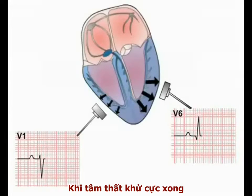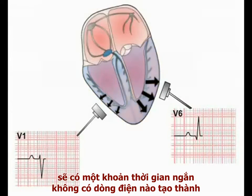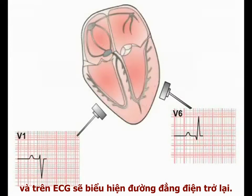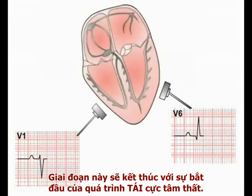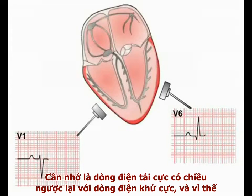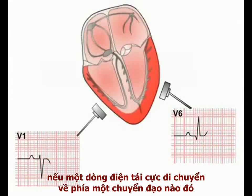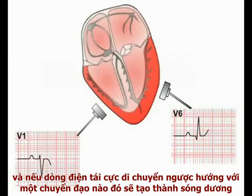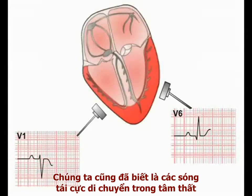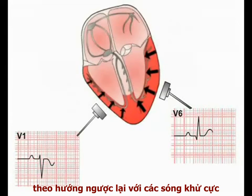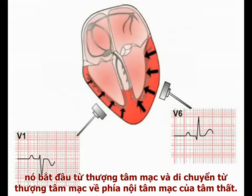When ventricular depolarisation is complete, there is a brief period when no current is flowing and the recording returns to the isoelectric line. This period ends with the onset of ventricular repolarisation. Repolarising current has the opposite polarity to the depolarisation wave, and therefore when it is moving towards a lead it produces a negative deflection on the ECG paper, and a positive deflection when moving away from a lead. We've already seen that repolarisation spreads through the ventricles in the opposite direction to the depolarisation wave, beginning in the epicardium and spreading from the epicardial to the endocardial surface of the ventricles.